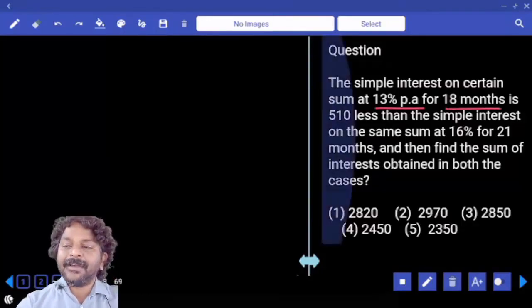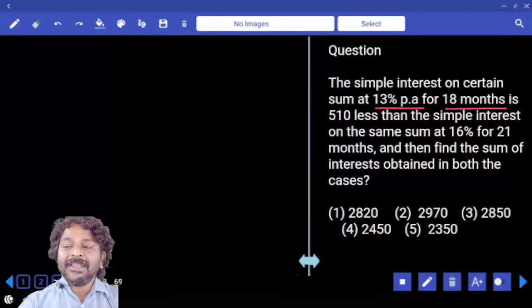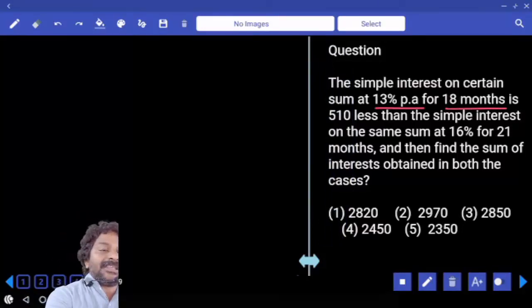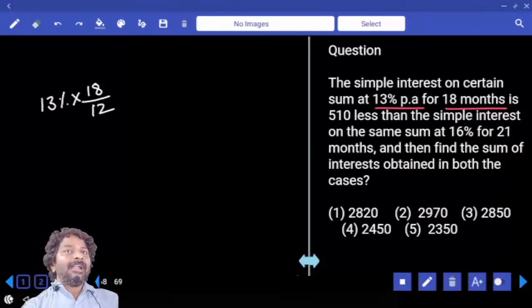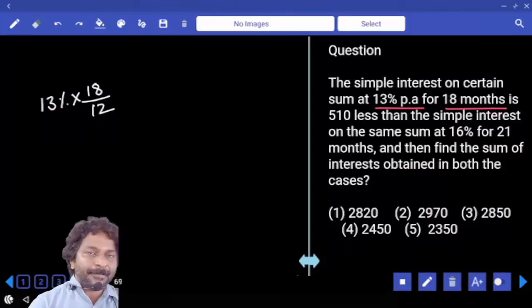13% per annum for 18 months, that is 13% into 18 by 12. Why? Because 13 is in terms of percentage per annum and time also should be in years only.